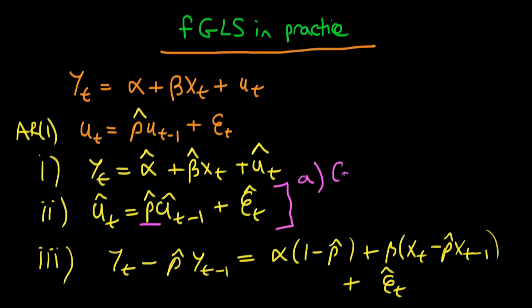The first is what we call the Cochrane-Orcutt procedure, and in the Cochrane-Orcutt procedure we essentially just do what we've indicated here in the sort of second step. And because of that we actually omit the first observation because there is no observation for the first observation, so I can't actually estimate this relationship for the case when t equals zero. So by omitting that first observation I'm missing out on a bit of information.